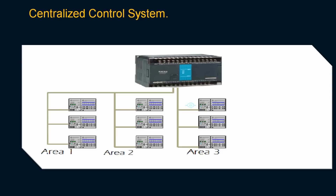First, we will talk about what is a centralized control system. In every plant, there are different units and different processes going on. Every unit or area has its own processes. For example, if you have three areas in one plant — area 1, area 2, and area 3 — and you put one centralized PLC there to control all three areas, what will happen if that controller fails? All areas connected to it are going to be stopped, all the processes are going to be stopped, and the whole plant is going to be shut down.